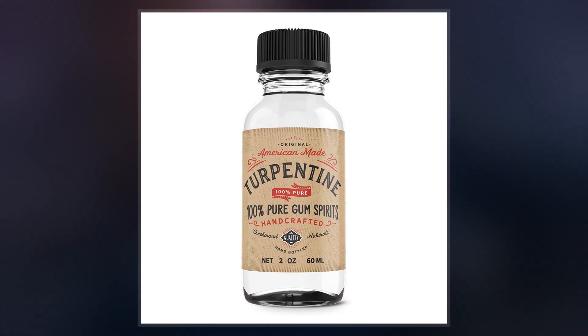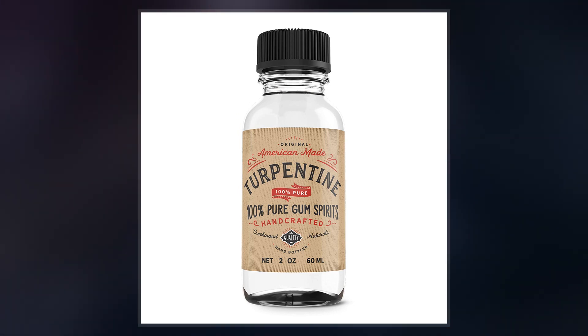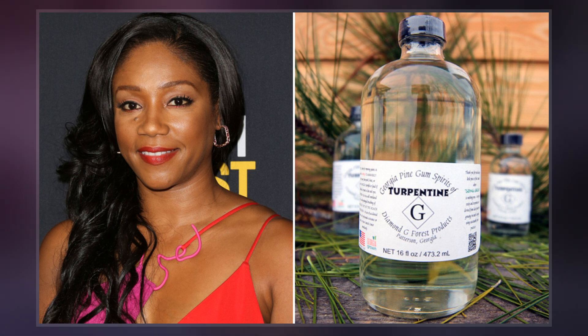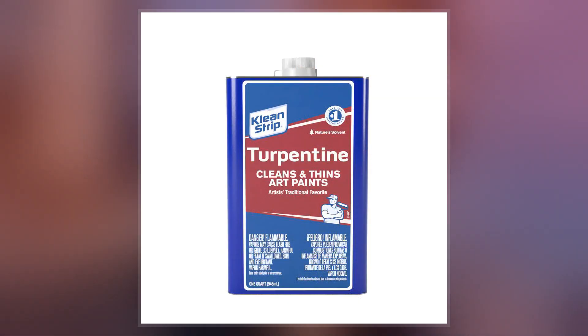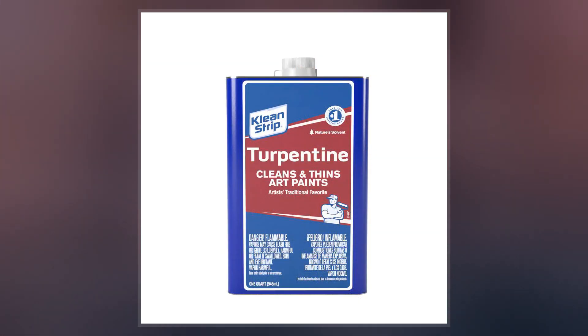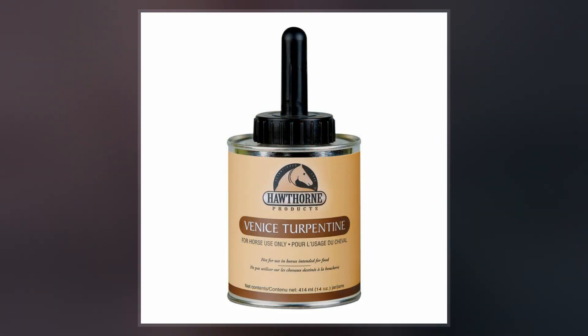One of the earliest sources of turpentine was the terebinth or turpentine tree, a Mediterranean tree related to the pistachio. Important pines for turpentine production include maritime pine, Aleppo pine, Masson's pine, Sumatran pine, longleaf pine, loblolly pine, and ponderosa pine.